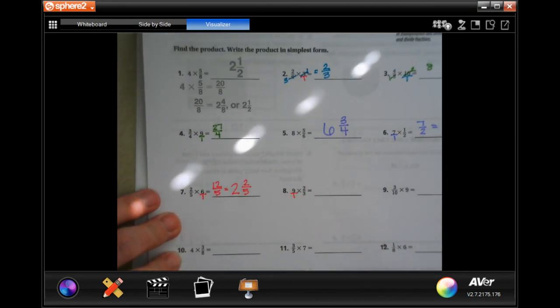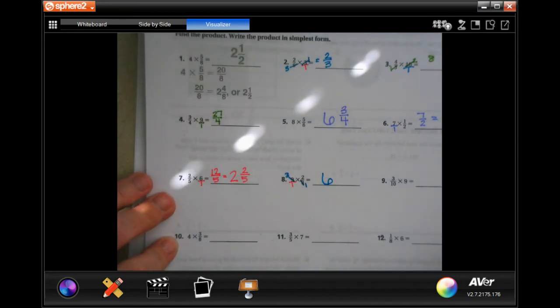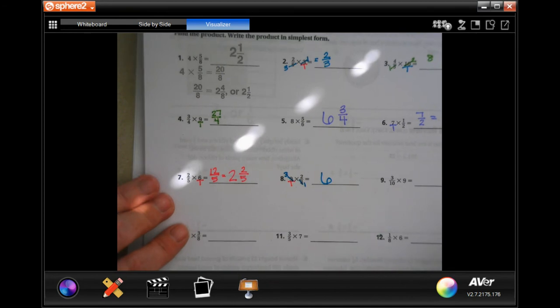Put your 9 over 1. Now, we can go in and we can reduce because 3 goes into 3 once, and 3 goes into 9, 3 times, and 3 times 2 is 6. And if it's over a 1, like this would be, then it's just 6.